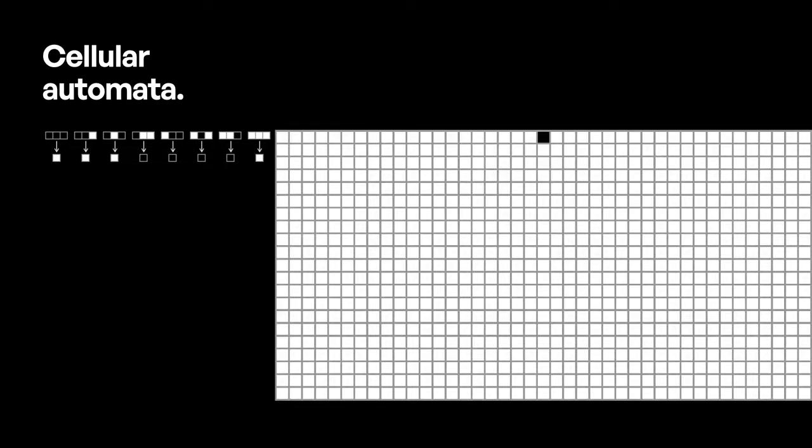Moreover, imagine that we start with a very simple configuration. Please look at the top row here. We have all cells which are white except for the one in the middle, which is black. Now we will apply these rules in order to obtain the black-white configuration of the second row, and from that configuration we will apply again the rules to obtain the configuration of the third row, and so on.